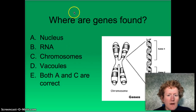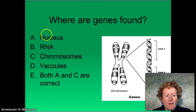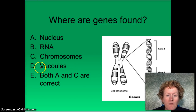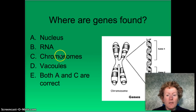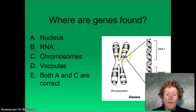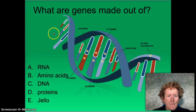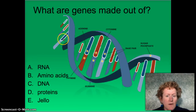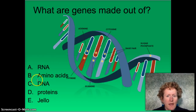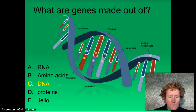Where are genes found? Are they found in the nucleus, in RNA, in chromosomes, or in vacuoles? Both A and C are correct: genes are found on chromosomes, and those chromosomes are found in the nucleus. Remember, genes are made out of DNA.